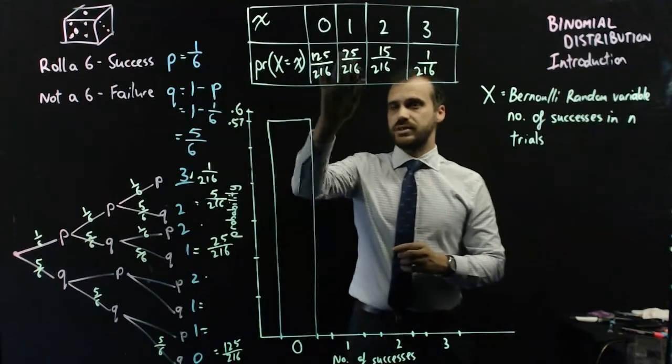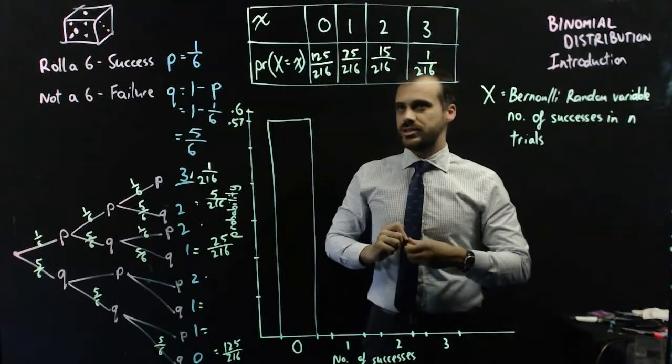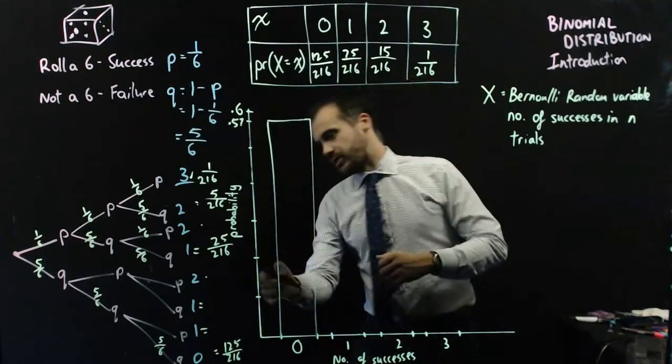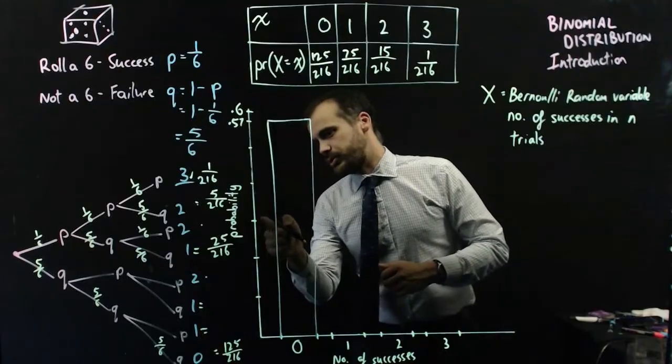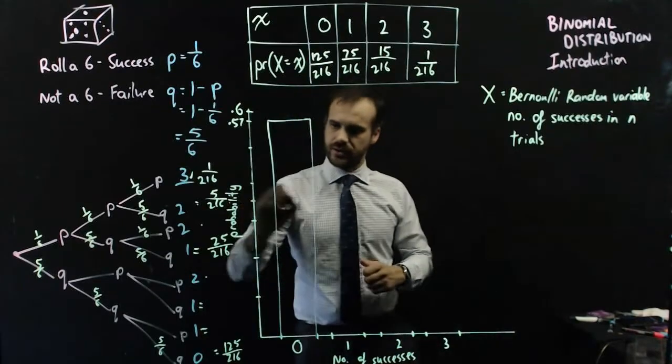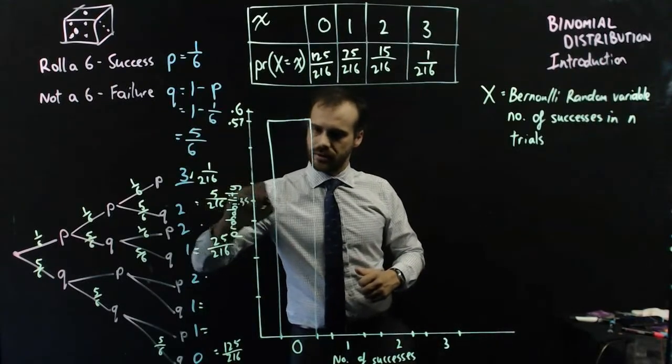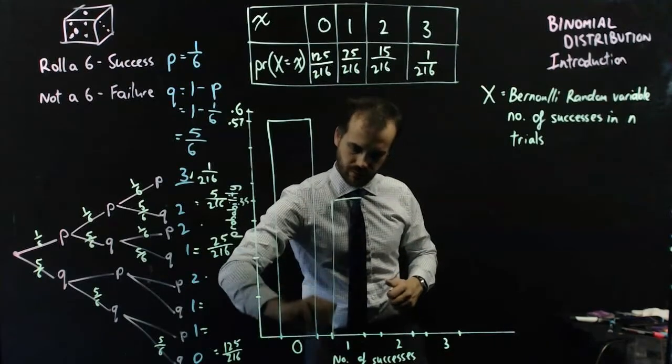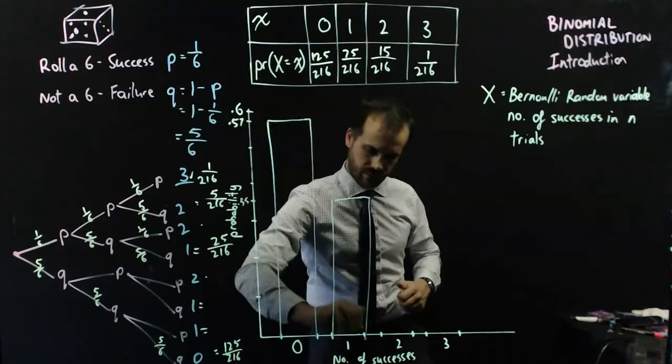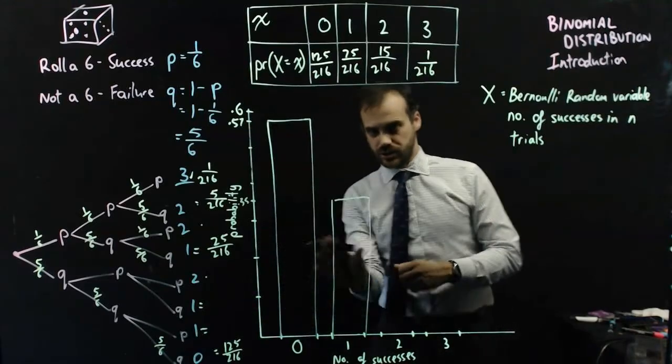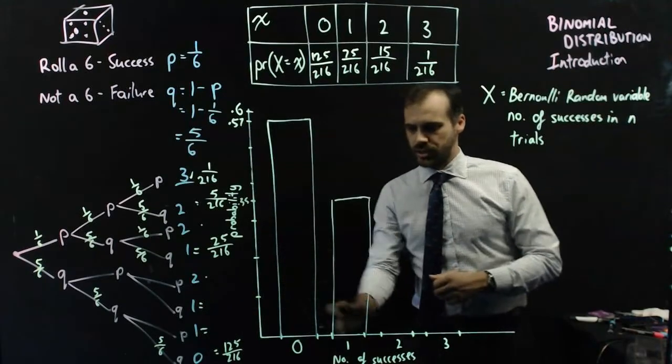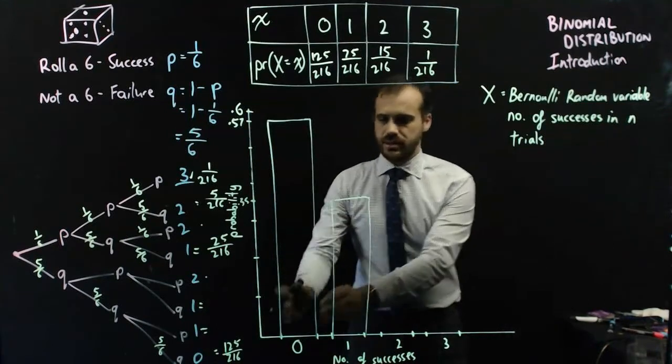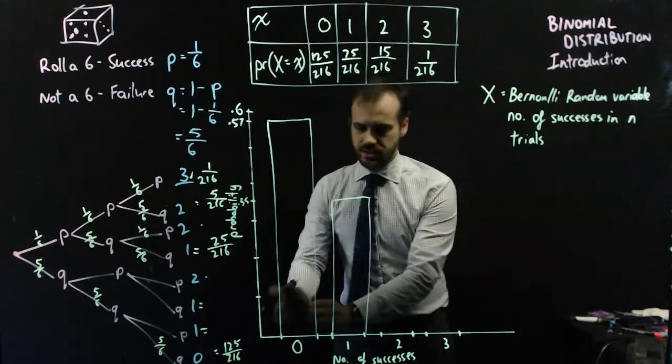Next up, we have 75 out of 216. That's approximately 0.35. So 0.1, 0.2, 0.3, 0.35 right there. They're equal in width. A space between them because 0 and 1. This is the number 1, and this is the number 0. 1 success, 0 successes.